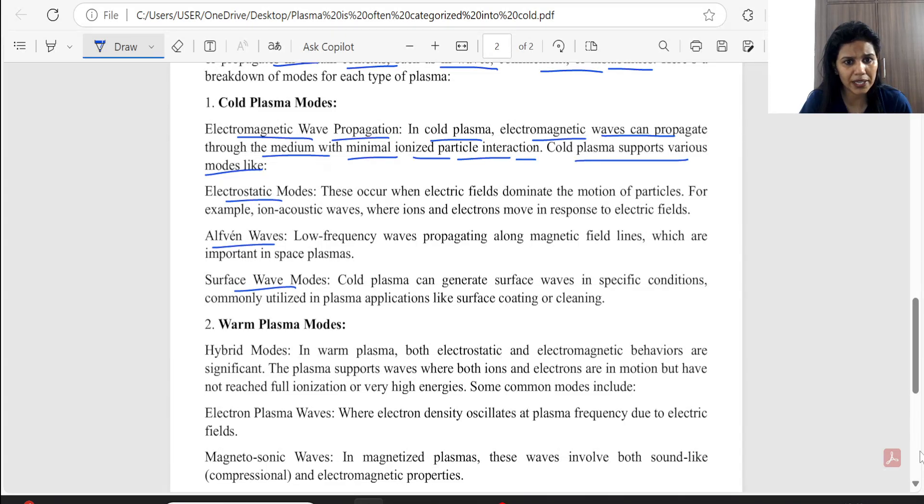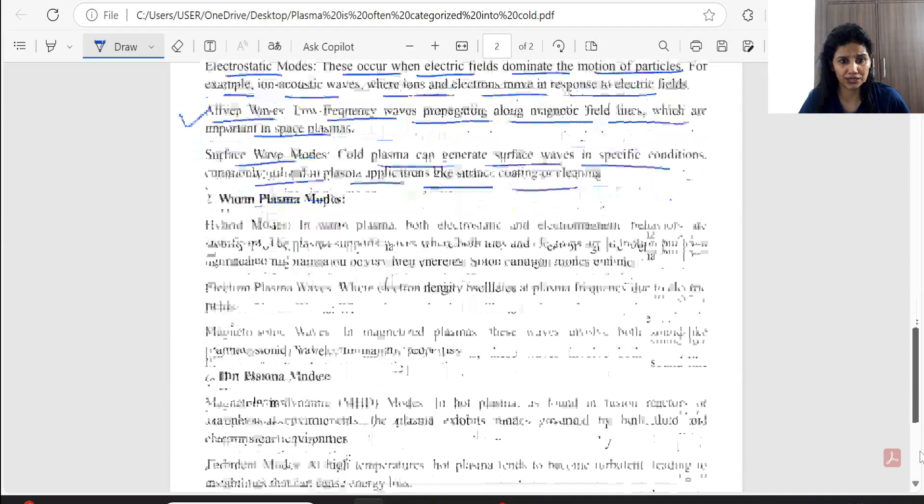What is electrostatic mode? These occur when the electric field dominates the motion of particle. The motion of particle is the electric field dominates. Then these modes come. For example, ion-acoustic wave, where ion and electron move in response to electric field. We will read the details about alpha and wave. But here, read the short wave. Low-frequency wave is propagating along magnetic field lines, which are important in space plasmas. Surface wave mode. Cold plasma can generate surface wave in specific conditions commonly utilized in plasma application-like surface. This is a whole theory actually.